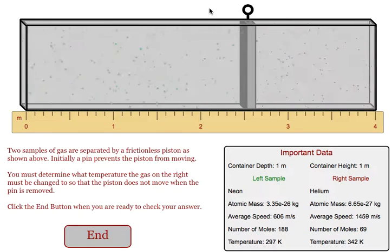In this program, we need to find what temperature to set the right-hand side of our container so that when we pull the pin out of this movable piston, the piston does not move.